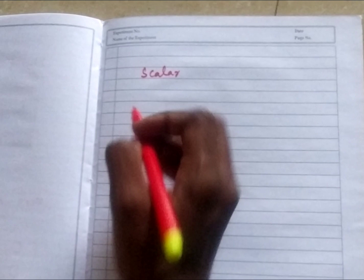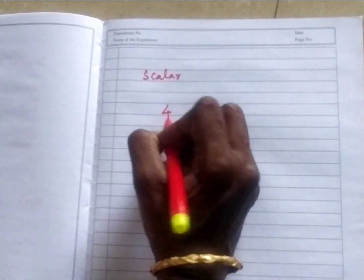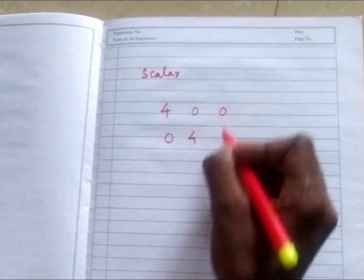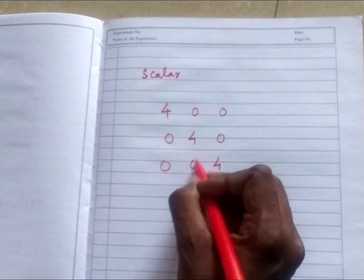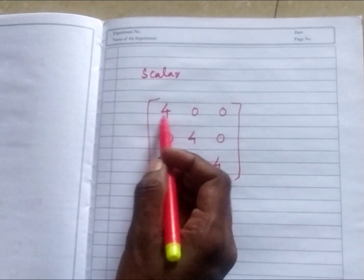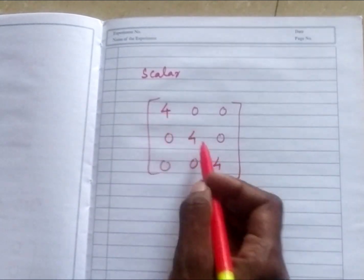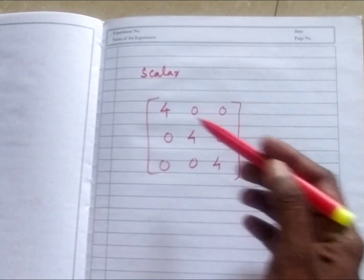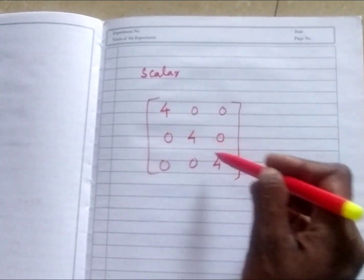Next is scalar matrix. Scalar means in the diagonal, the numbers are same. It is not that only 1. So you have to take common. If you are taking common, which one you will take common? 4 can be outside. So here 1, 1, 1. So it can be 4, 4, 4, 10, 10, 10, 9, 9. Scalar means there should be common number.